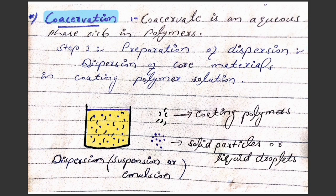In the coacervation method we have several steps. The first step is the preparation of dispersion. For the preparation of dispersion, first we will take the solvent — this yellow color shows us the solvent — and we will add the polymers to get the polymer solution. After this we will add the core material, meaning the drug material, into the polymer solution and we will get a dispersion.